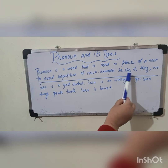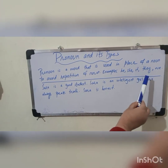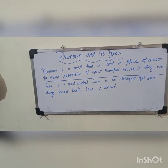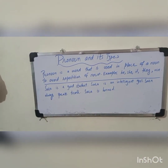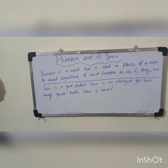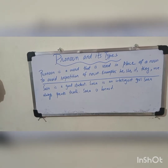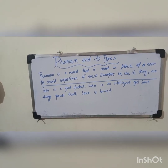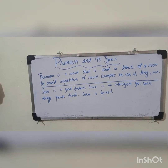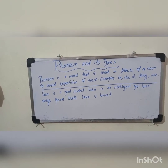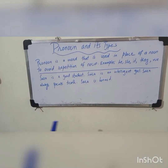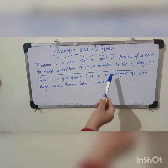Examples: he, she, it, they, we. Pronoun ایک ایسا word ہوتا ہے جو کہ ہم noun کی جگہ پر استعمال کرتے ہیں تاکہ بار بار ہم noun کو repeat نہ کریں۔ اس سے بچنے کے لئے ہم pronoun use کرتے ہیں جیسا کہ he, she, it, they, we.